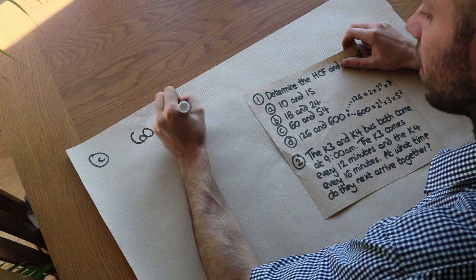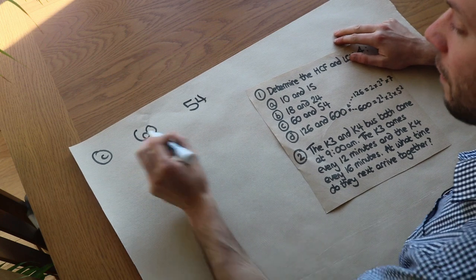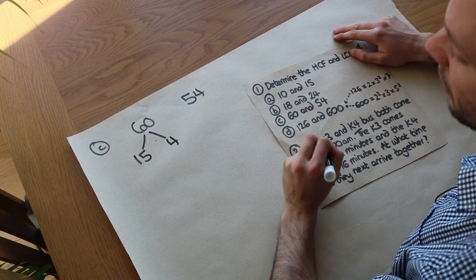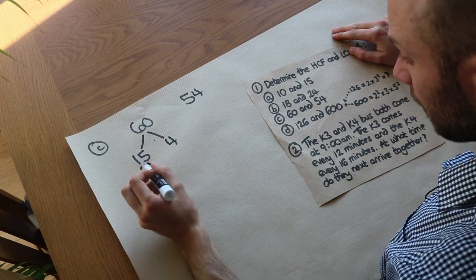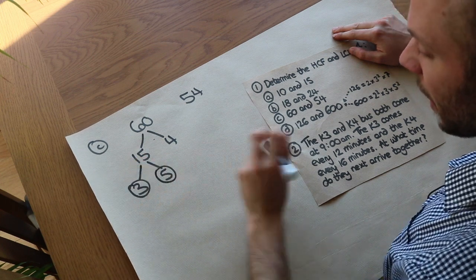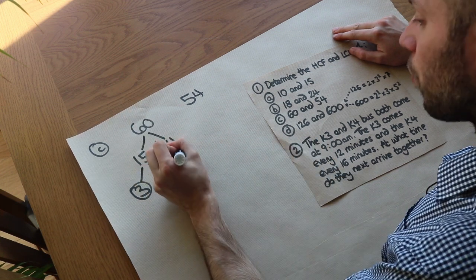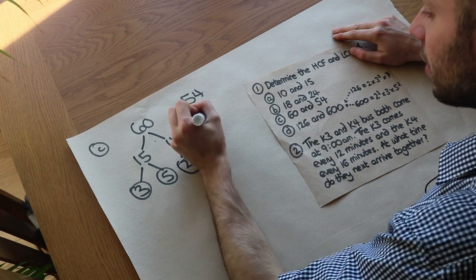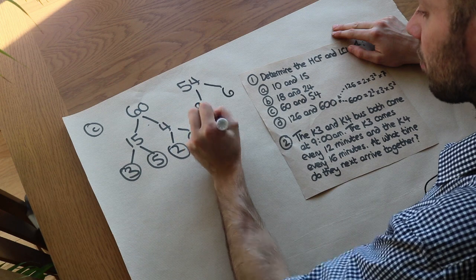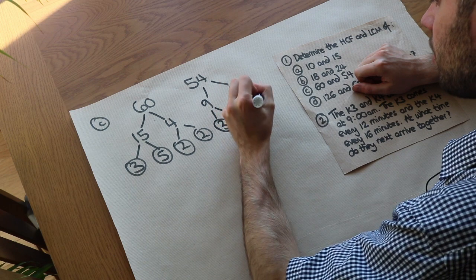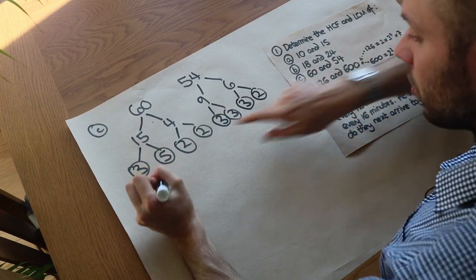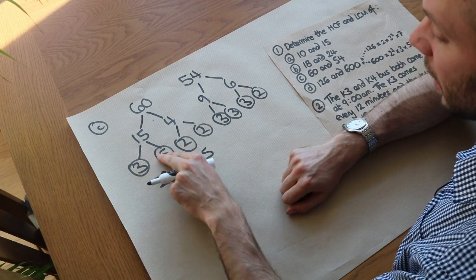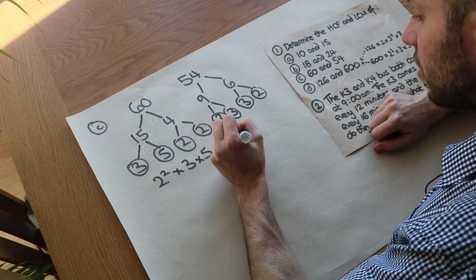For larger numbers, find the prime factorization of each number first. For 60: 60 is 15 times 4; neither is prime so we split further — 15 is 3 times 5 (both prime, circle them), and 4 is 2 times 2 (both prime, circle them). For 54: 54 is 9 times 6; 9 is 3 times 3 and 6 is 3 times 2. So 60 equals 2 squared times 3 times 5, and 54 equals 2 times 3 cubed.